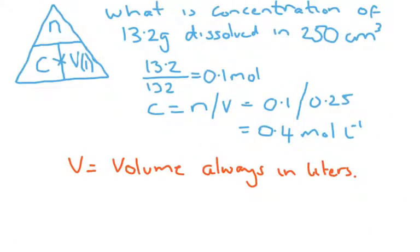Concentration. Looking at the same material, we have a similar formula. Again, to find the number of moles, put your thumb over the N. That will give us concentration times volume. To find the concentration, put your thumb over the C, giving us number of moles divided by the volume. The volume must be expressed in litres.